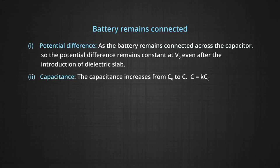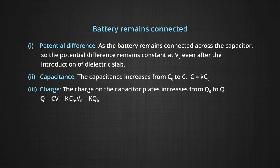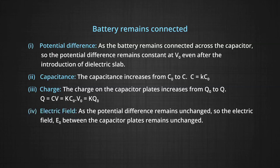Number 2, the capacitance: the capacitance increases from C₀ to C, and C will be equal to K times C₀. Now, the charge: as charge Q is C times V₀, and the capacitance has increased K times, it becomes equal to K times C₀ times V₀, with potential remaining same at V₀, so the result comes out to be K times Q₀. Electric field: as the potential difference remains unchanged, the electric field E₀ between the capacitor plates remains unchanged. E equals V by D equals V₀ by D, so this will be equal to E₀.